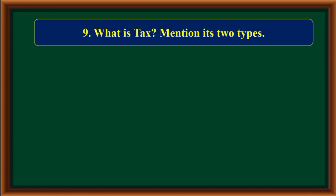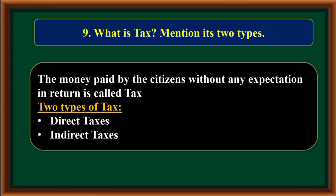What is tax? Mention its two types. The money paid by the citizens without any expectation in return is called tax. The two types of tax are direct tax and indirect tax.